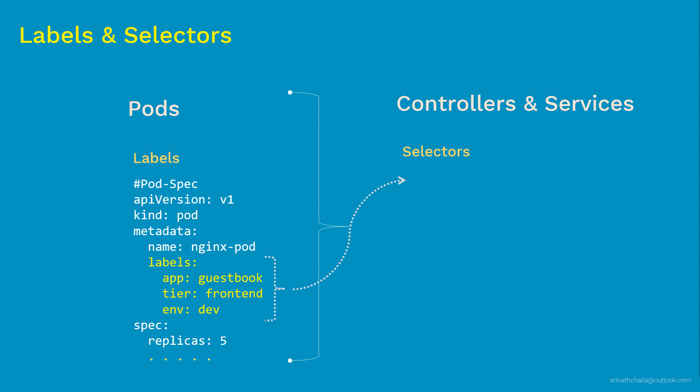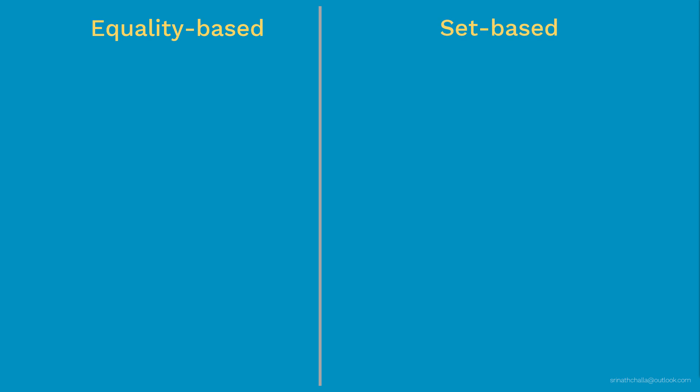Let's see what they are and how they differ. We have equality-based selectors on the left and set-based selectors on the right. For equality-based selectors, there are three operators: equal (=), double equal (==), and not equal (!=) — which is why they're called equality-based. The first two are effectively the same. On the set-based side, there are also three operators: 'in', 'not in', and 'exists'.